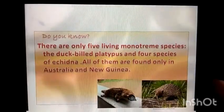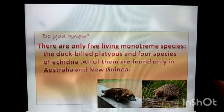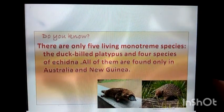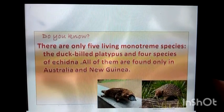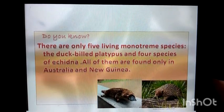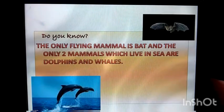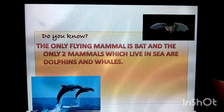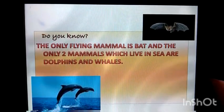Do you know? There are only 5 living monotreme species: the duck-billed platypus and 4 species of echidna. All of them are found only in Australia and New Guinea. Also, the only flying mammal is the bat, and the only 2 mammals which live in the sea are dolphins and whales.